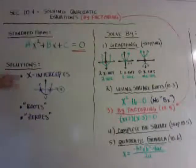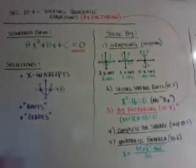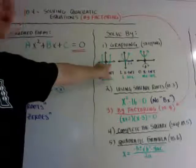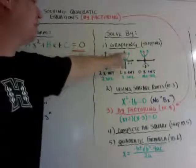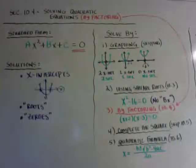Solutions can also be called x-intercepts, roots, or zeros, so again we're looking for the x-intercepts. We are skipping solve by graphing, but make sure you know that you have two solutions if it crosses twice, one solution if it just touches it, or no solution if it never touches the x-axis.